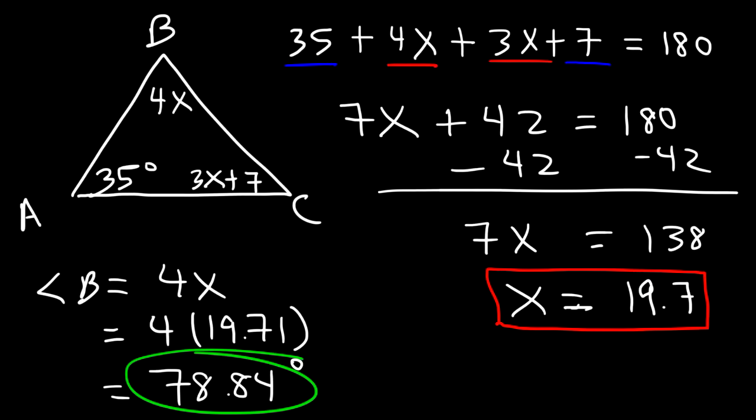Now if you want to find angle C, simply plug it in to 3x plus 7. So angle C is going to be 3x plus 7, but let's replace x with 19.71. 3 times 19.71 is 59.13. And then if you add 7 to it, you're going to get this angle 66.13 degrees. So that's the value of angle C.